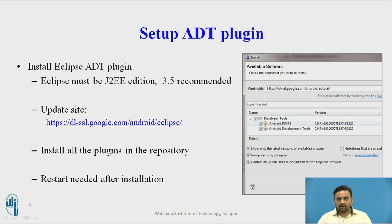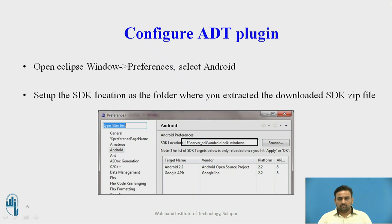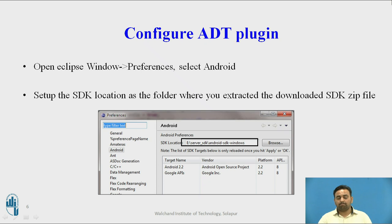While installing the ADT bundle, there are some tools whose checkboxes you need to check to mark them ready for installation. For configuration, go to your IDE, then the Window menu, then Preferences, then select Android. It will ask for a path — where your SDK is downloaded and extracted. You have to specify that path so it can be configured.